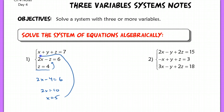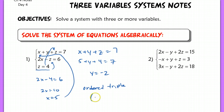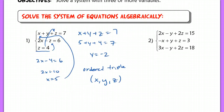Now I can plug x back in and plug in z as well to get y alone. So x plus y plus z equals 7 gives me 5 plus y plus 4 equals 7. If I subtract that 9 over to the other side, I end up with y equals negative 2. When I write my answer, this is called an ordered triple — instead of an ordered pair, it's written in terms of x, then y, then z. So our answer is 5, negative 2, and 4.